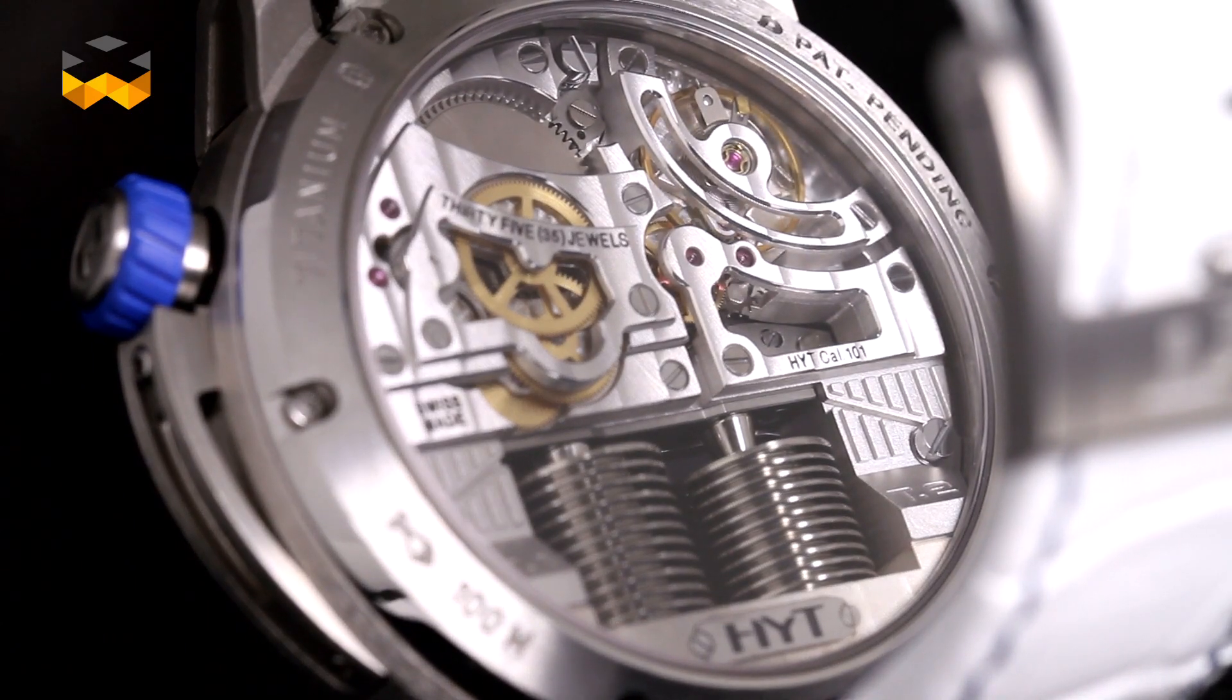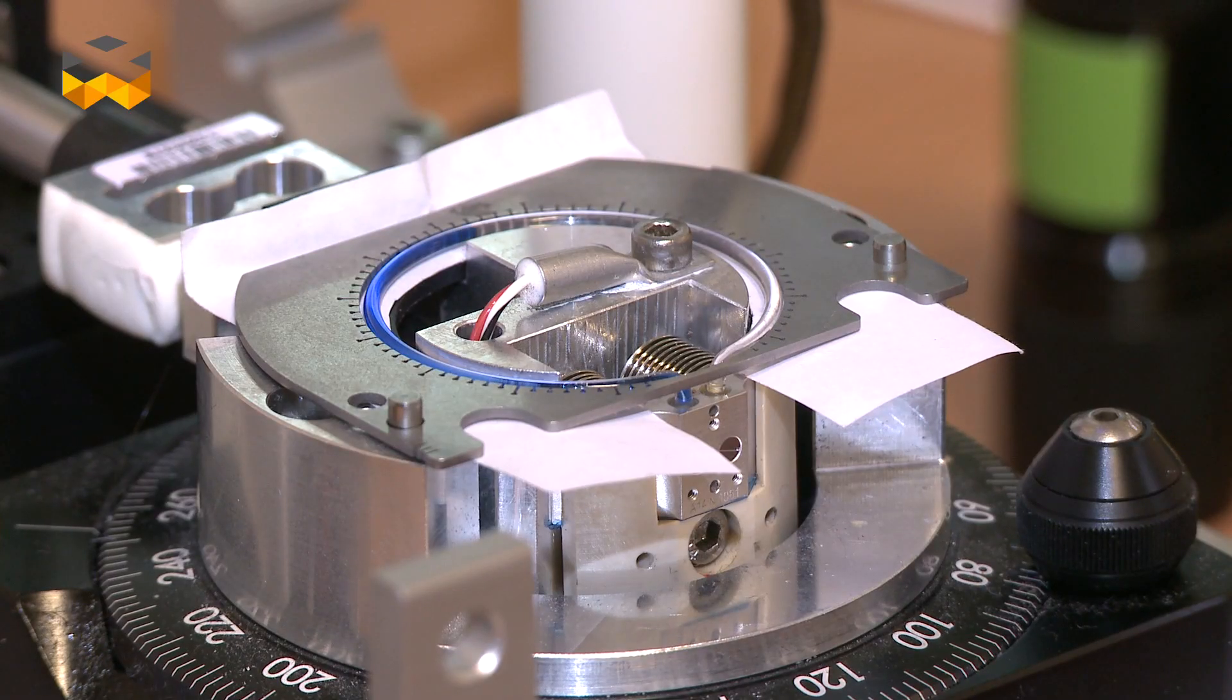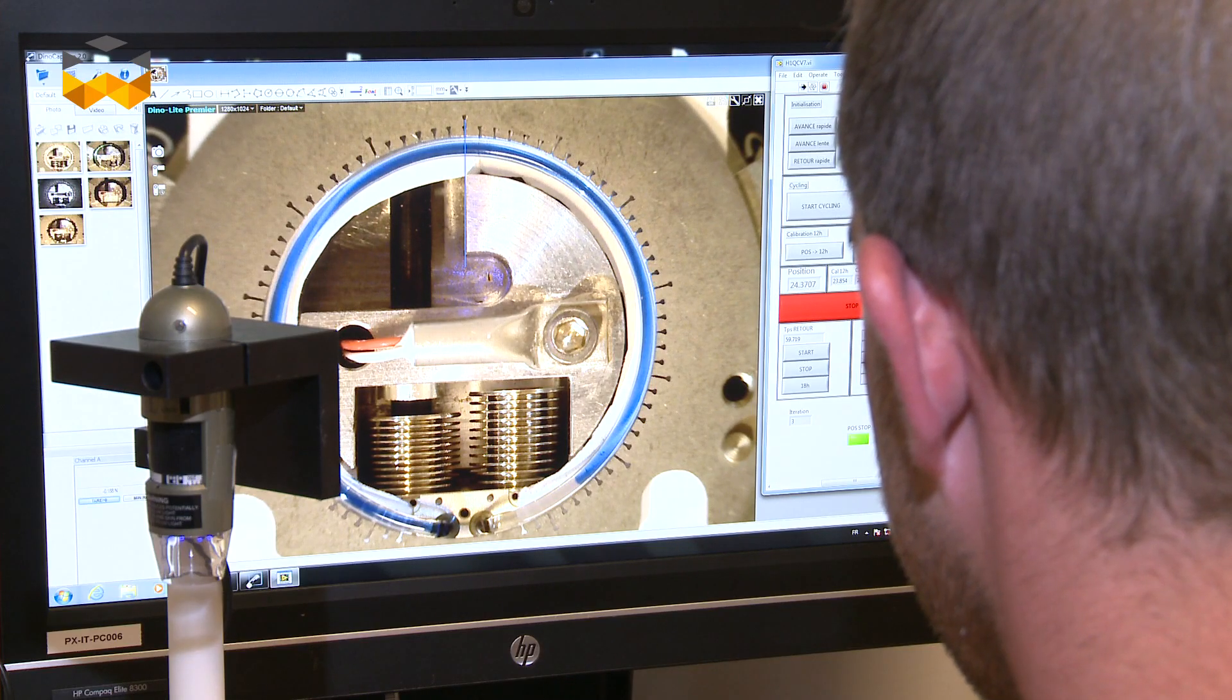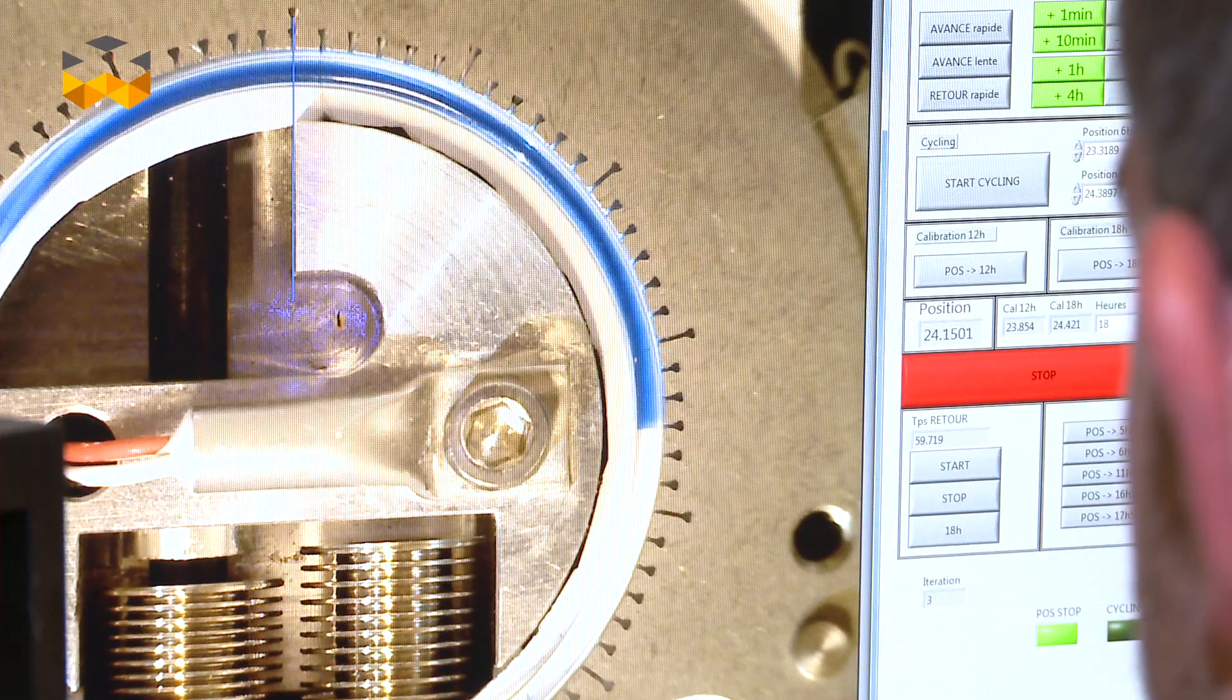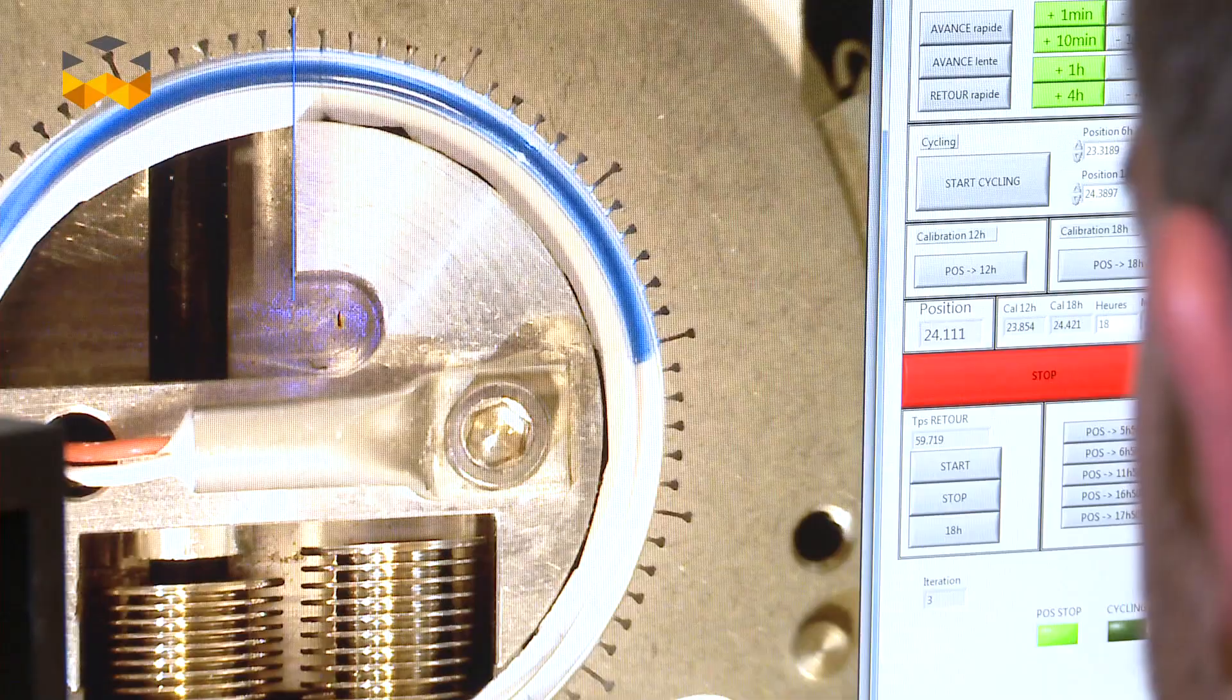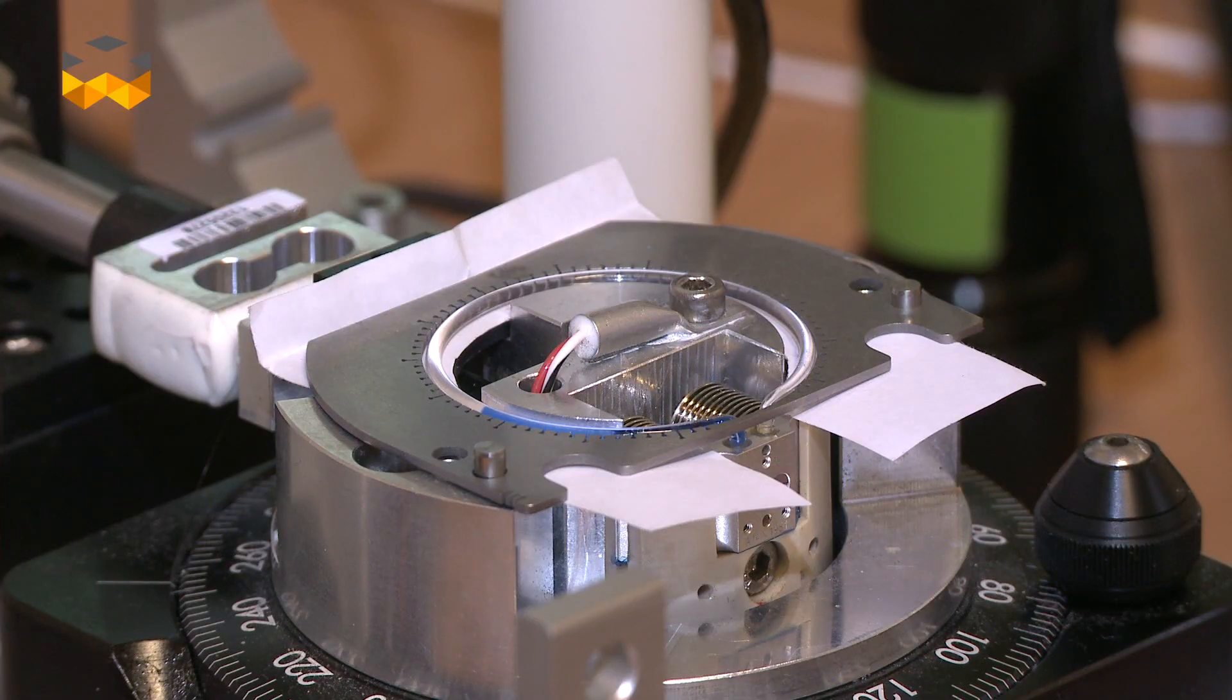Then we enter into a long period of test and qualification, which is aging test. It's like accelerating the time in order to make sure that after let's say four, five, six months of aging, it's an equivalent of three, four, five years of living of the system.